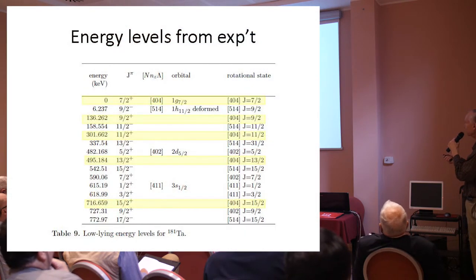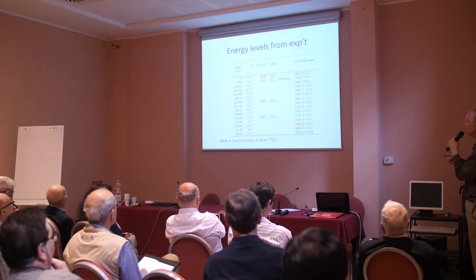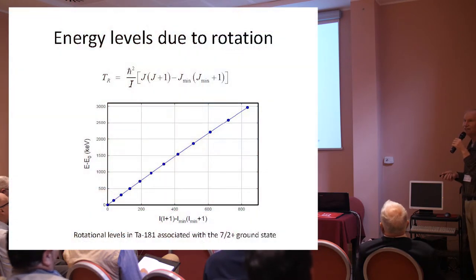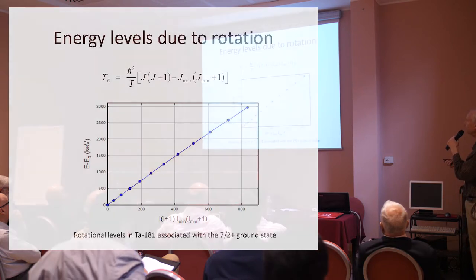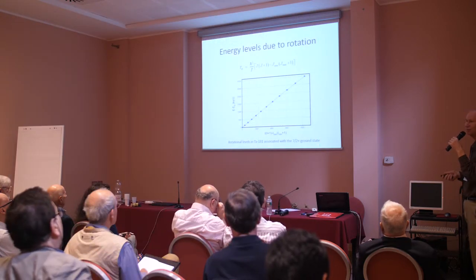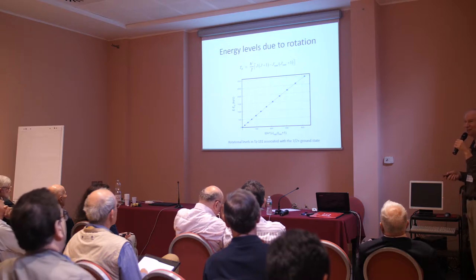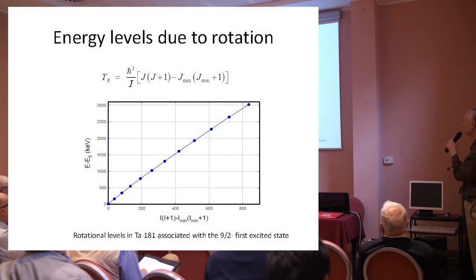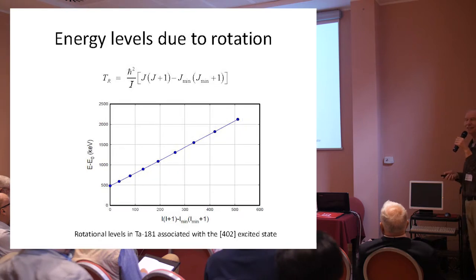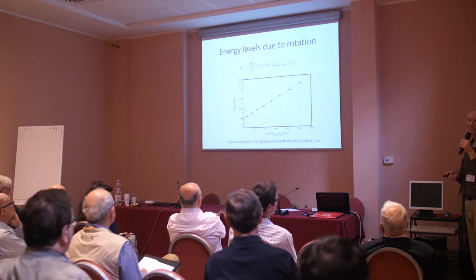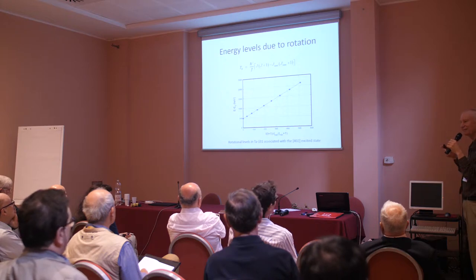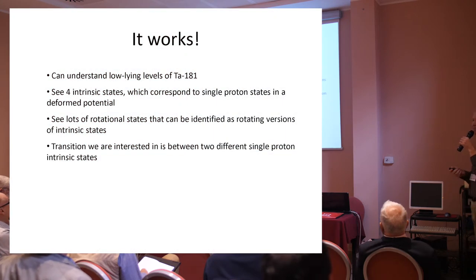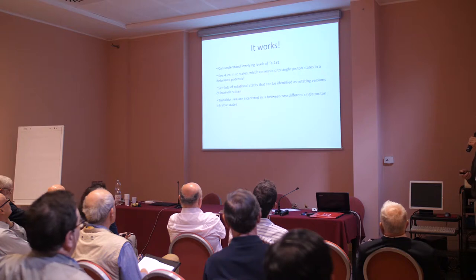For example, if the ground state gets rotated, here's one with one unit of angular momentum extra, two units, three units, four units, and it keeps going. I went to the NuDAT2 database, pulled them all out, and plotted them against the kinetic energy — I get a beautiful, nearly straight line, so I'm convinced the states are actually rotated versions of the ground state. This is for the first excited state, the second excited state. The fourth one and its rotations haven't been identified systematically at this point, but the model works.